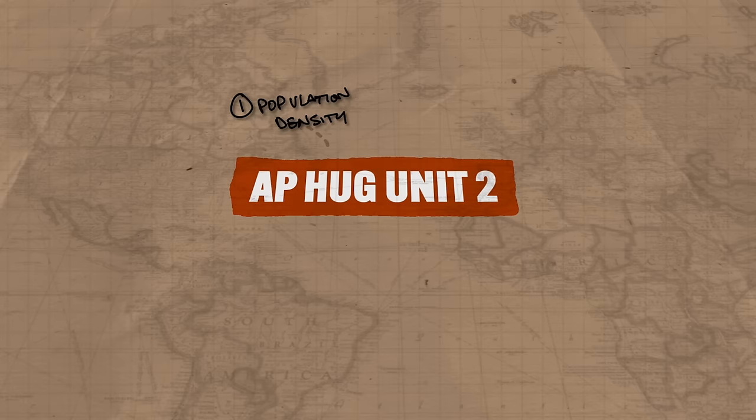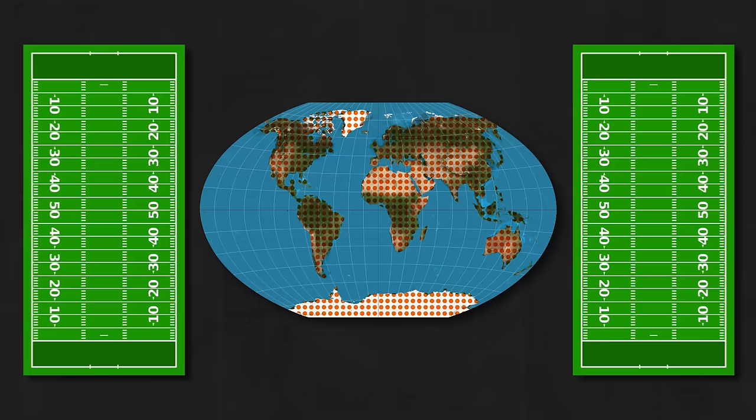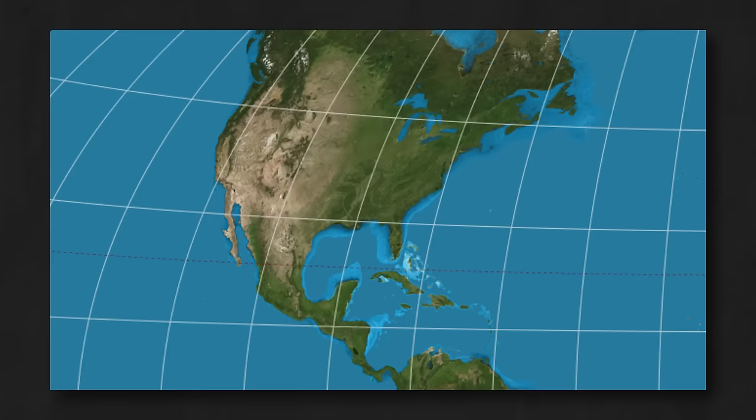Let's begin by talking about population distribution. When we talk about population, we're talking about groups of people. Population distribution refers to the pattern of human habitation on the Earth's surface. If every single person were spread out evenly over the Earth's surface, each of them would have about two football fields to live on. But the Earth's humans are not in fact evenly distributed — some live isolated miles from other humans, while others live packed together very tightly.